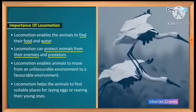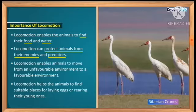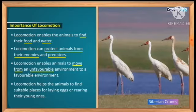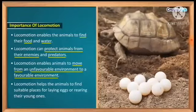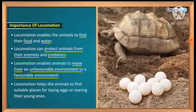Third: locomotion enables animals to move from an unfavorable environment to a favorable environment. With the help of locomotion, animals move from unfavorable conditions to favorable conditions. Like the Siberian crane — when it is winter in Siberia and conditions become unfavorable with very cold temperatures, the Siberian crane migrates to India through locomotion, reaching favorable conditions.